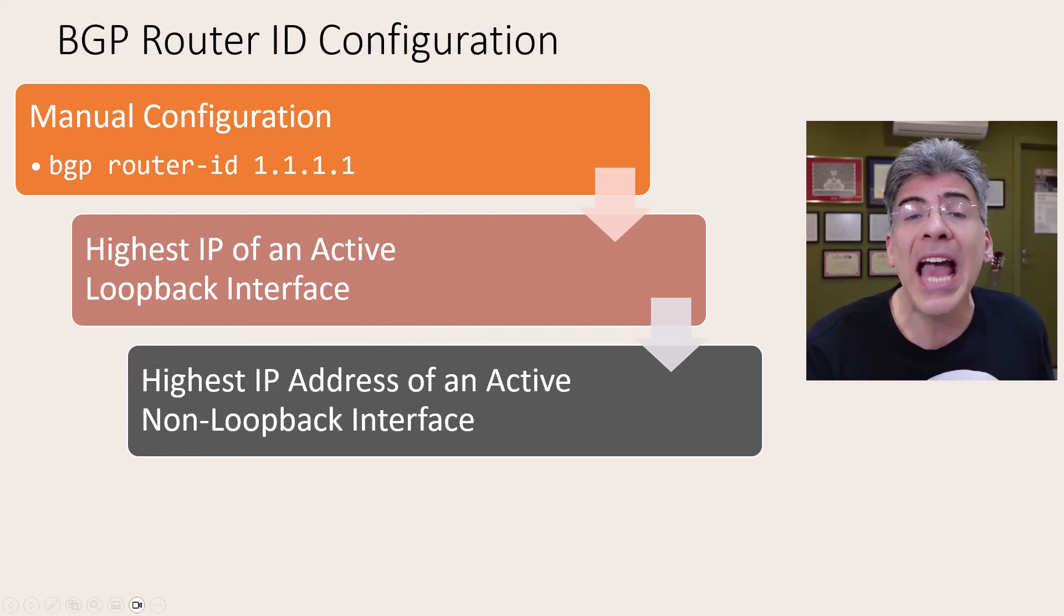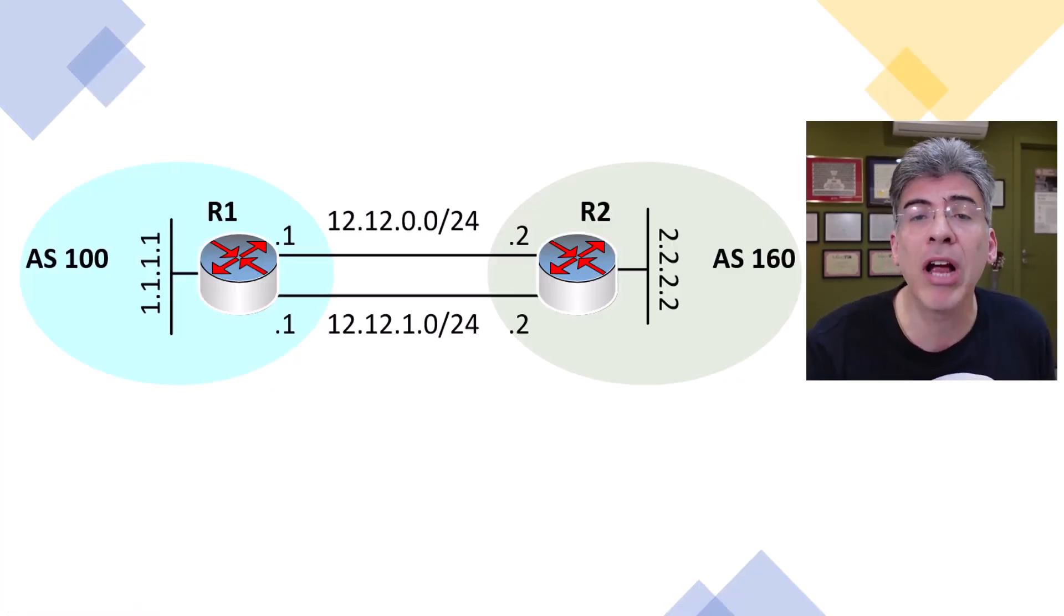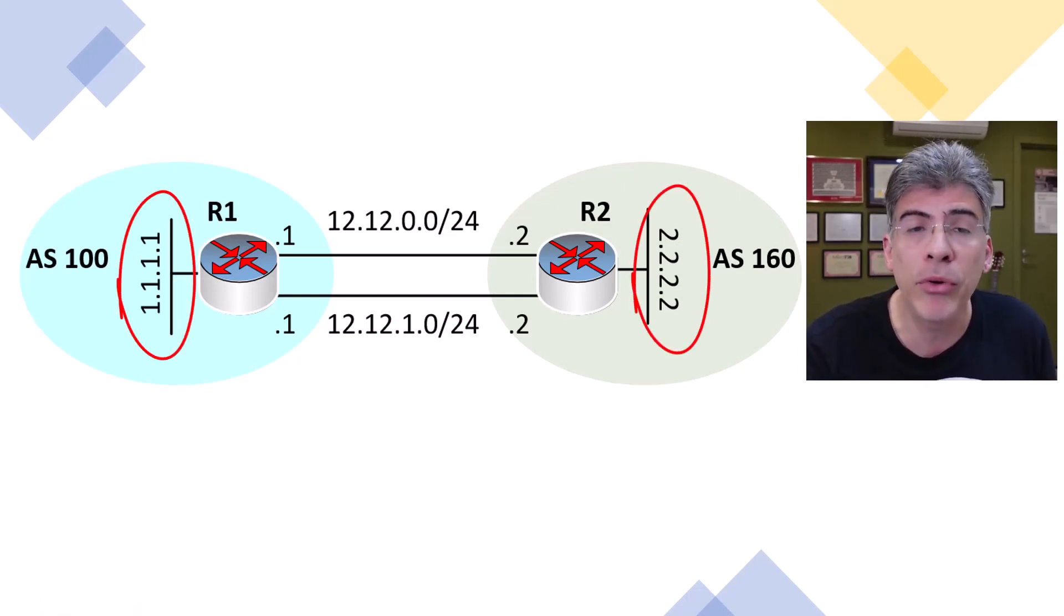Now, in our case, we haven't manually configured the router ID in either router. And since we have active loopback interfaces on both, those IP addresses are used as the BGP router IDs.